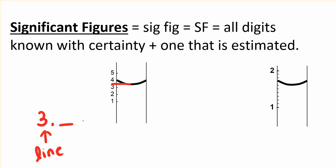The next digit though, there's no line for every 0.1, so I'm going to have to estimate between the three line and the four line, and I would estimate that that is about 3.3. So that is my estimated digit.